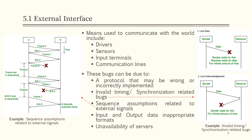Regarding sequence assumptions for external signals: acknowledgement zero is sent by receiver B, meaning it is ready to receive frame zero. Sender A sends frame zero but it is lost; on timeout, frame zero is sent again. Other issues include input and output data in inappropriate formats, and unavailability of the server.